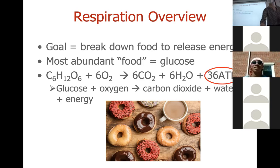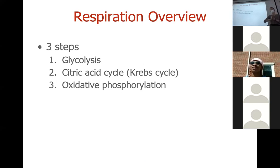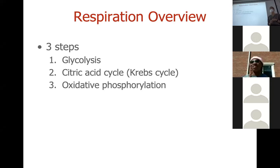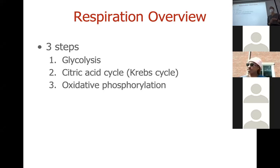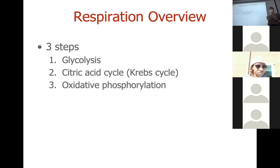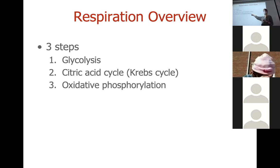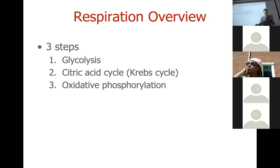That reaction happens over three fairly complicated steps. We have glycolysis happening first. Then we have something called the citric acid cycle — it also has another name, the Krebs cycle, and I'll ask you to know both. There's a lot of biology where we have multiple names for things. And then we have oxidative phosphorylation — that sounds really complicated, but that's the last step. The vast majority of the ATP we're making is made in this last step. The first step makes a little bit, the second a little more, and oxidative phosphorylation makes a ton of ATP.